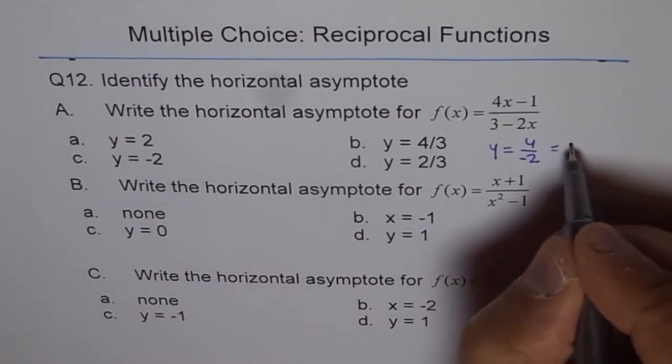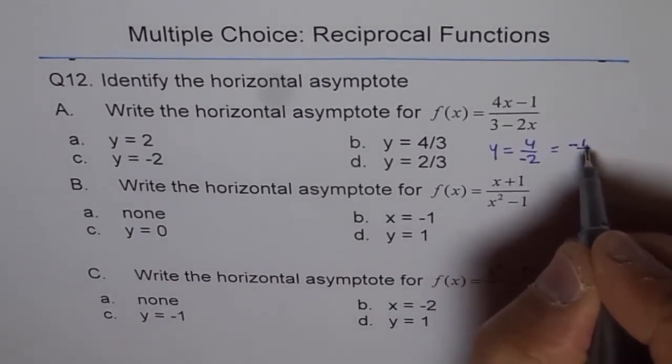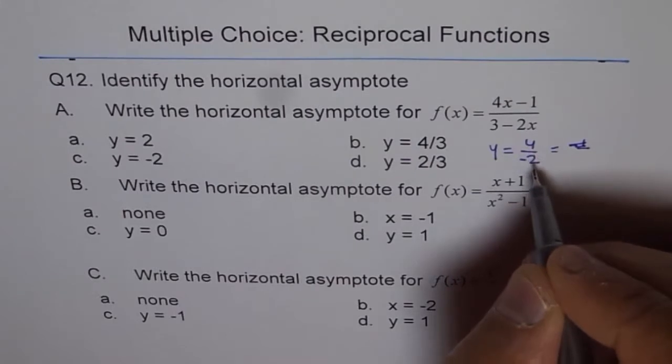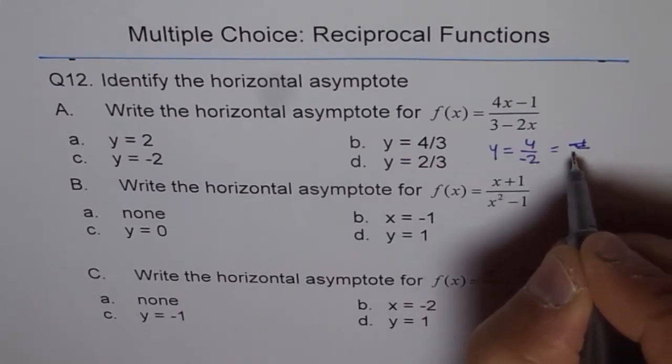What we get is 4 divided by 2 is 2, so we get minus 2 as our answer. So the choice is C.